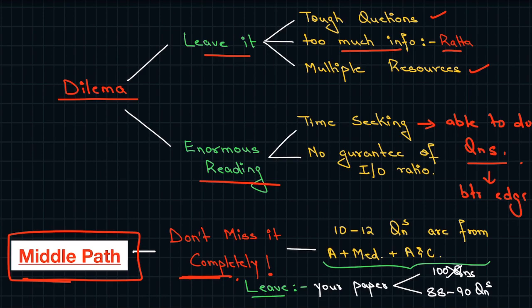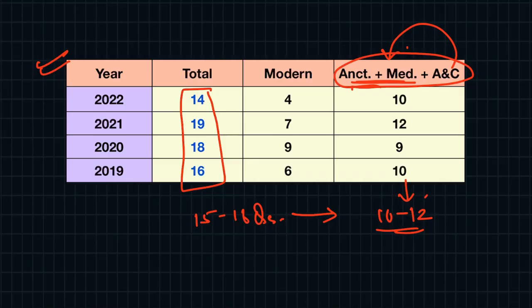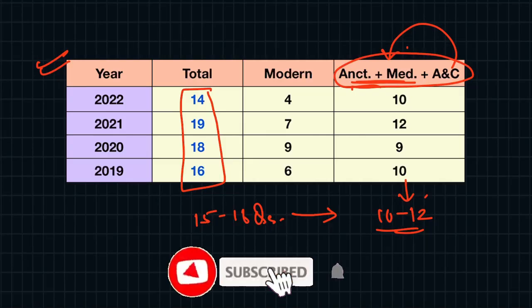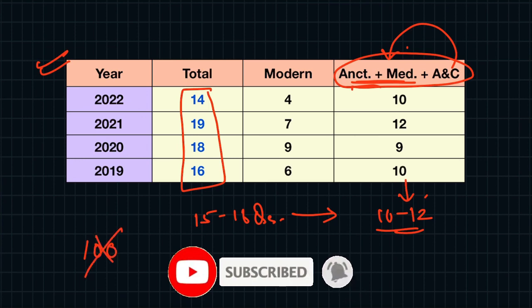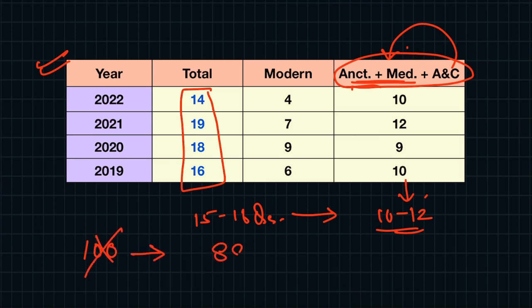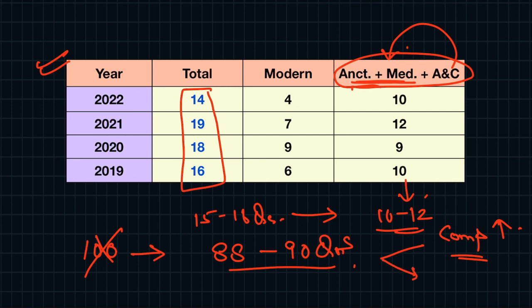That's why you don't have to leave this portion. Because if you leave it, you will miss out on 10 to 12 questions in the exam, meaning you will attempt only 88 to 90 questions total. When the level of competition is increasing, you cannot afford to miss such areas.